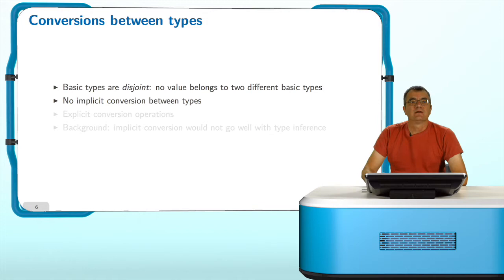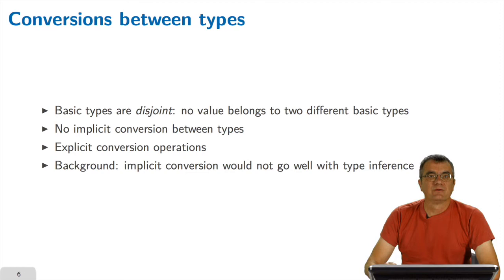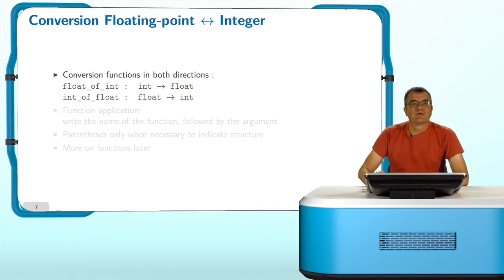There is of course a very good reason for this. The reason is that implicit conversion between types wouldn't go well with type inference, so this is a small price to pay to have this very important and very convenient feature of type inference in the OCaml system. In OCaml, we have in fact explicit conversion operations between almost all basic data types, and if they don't exist, then it's very easy to write them by yourselves.